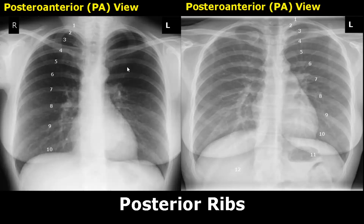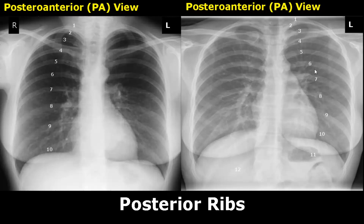We are starting off by looking at the posterior ribs. At least nine pairs of ribs must be seen behind the lung fields. This tells us that adequate inspiration was taken. These are the posterior ribs, having somewhat of a horizontal alignment.